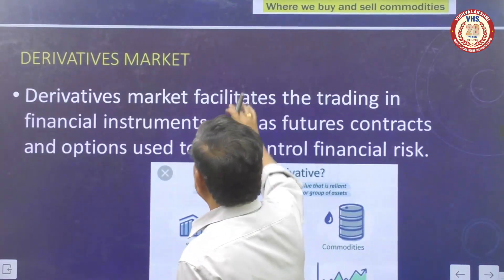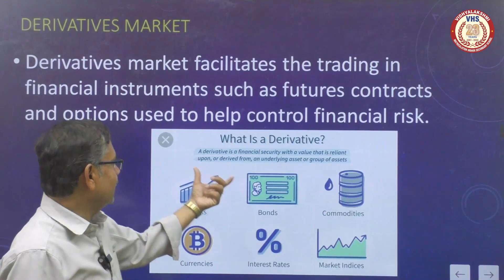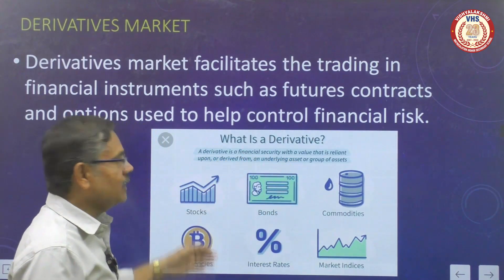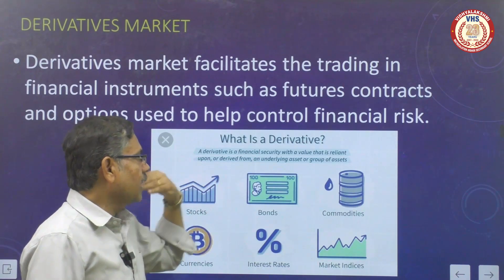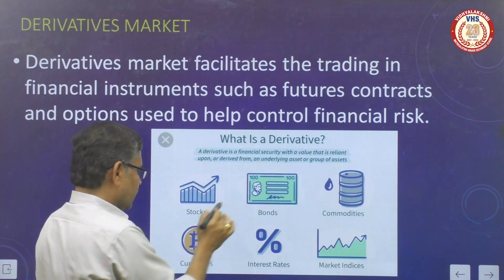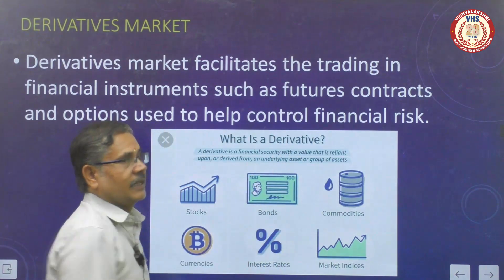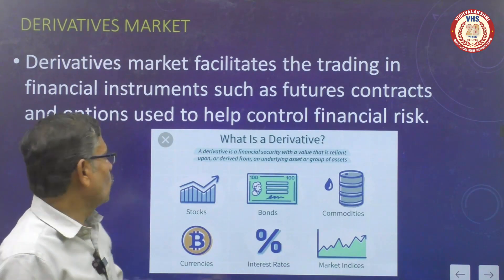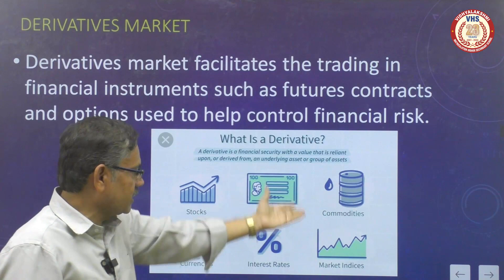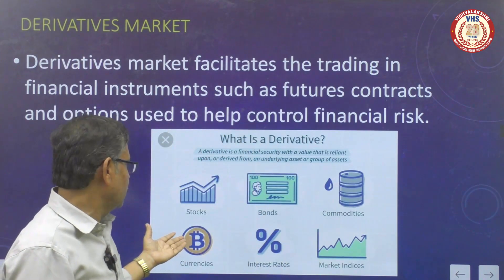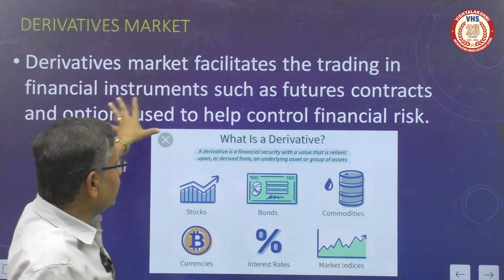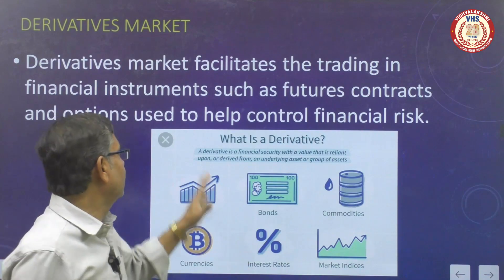The last heading is the Derivative Market. What is meant by derivative? A derivative is a financial security whose value is reliant upon or derived from the underlying asset or group of assets — for example, stocks, bonds, commodities, currencies, interest rates, and other market indicators. It is financial control of risk, and based on that you buy and deal with the derivative market. The derivative market facilitates trading in financial instruments — stocks, bonds, commodities, currencies, interest rates — and based on market indicators the financial capital risk is controlled.